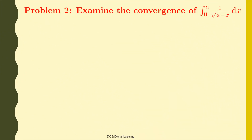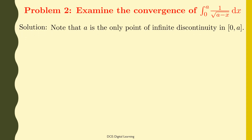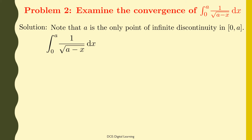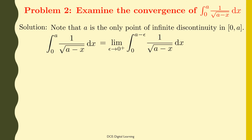Problem 2. Examine the convergence of the integral of 1/√(a − x) dx from 0 to a. Solution. Note that a is the only point of infinite discontinuity in the domain of integration, the closed interval [0, a]. So by definition, the integral of 1/√(a − x) dx from 0 to a equals the limit of the integral of 1/√(a − x) dx from 0 to a − ε as ε tends to 0 from the right.